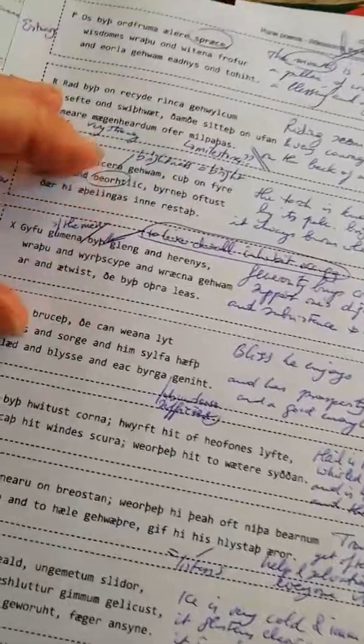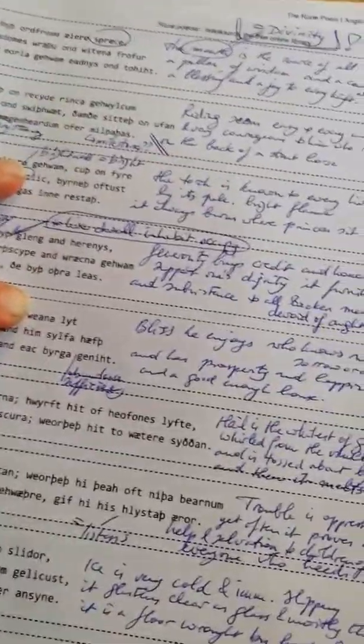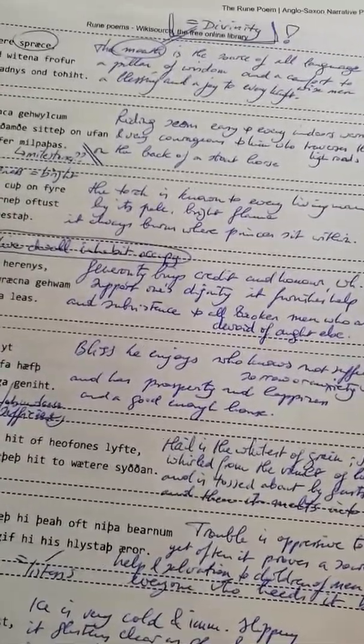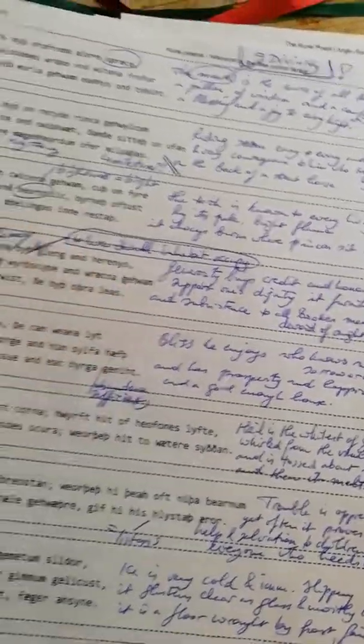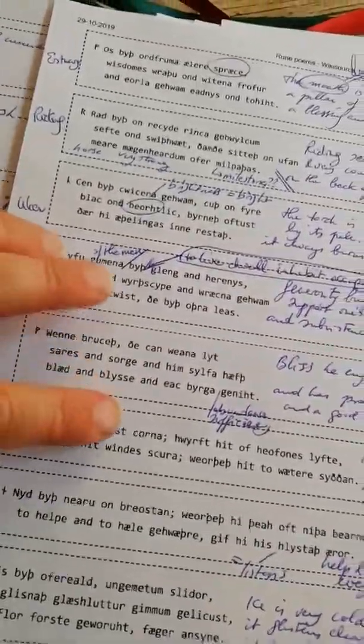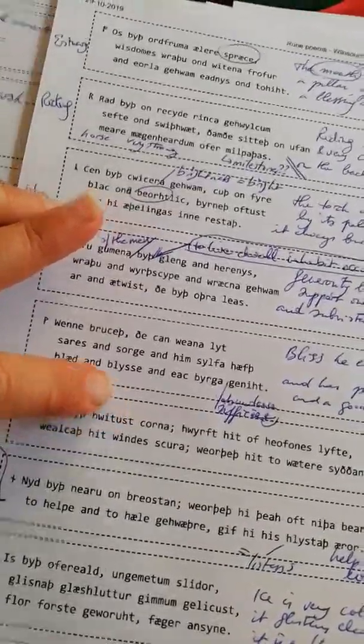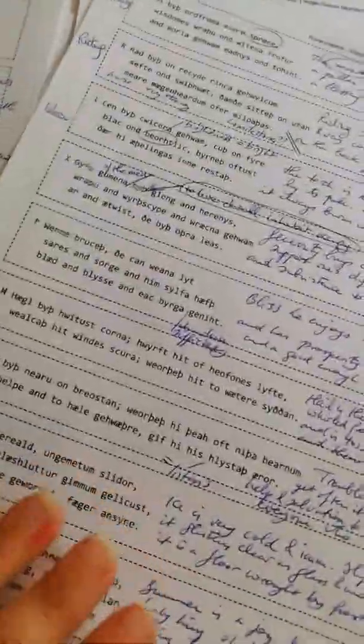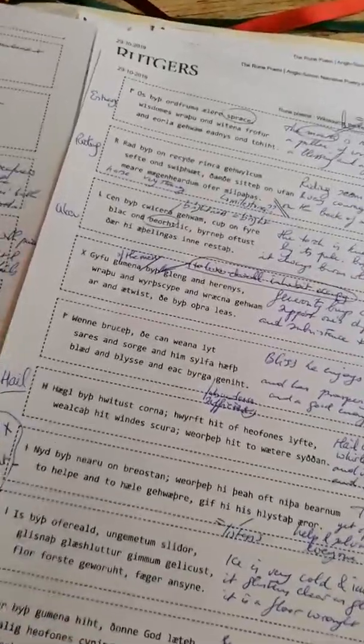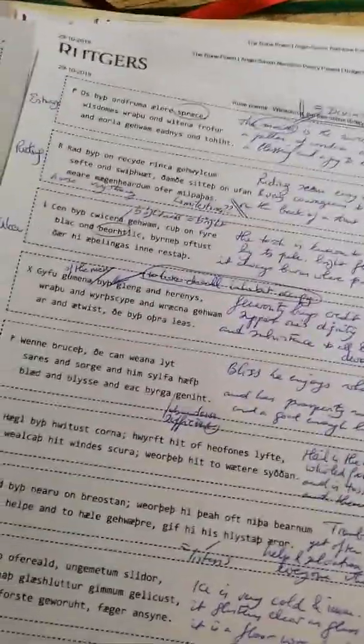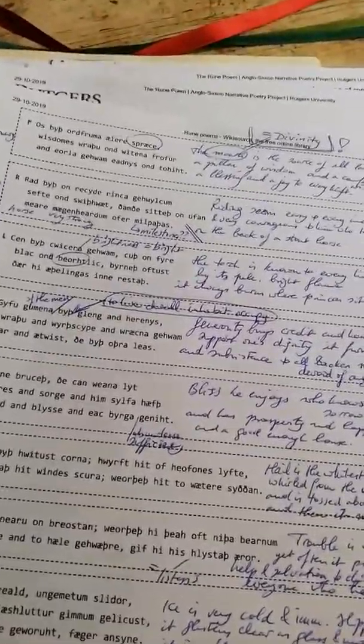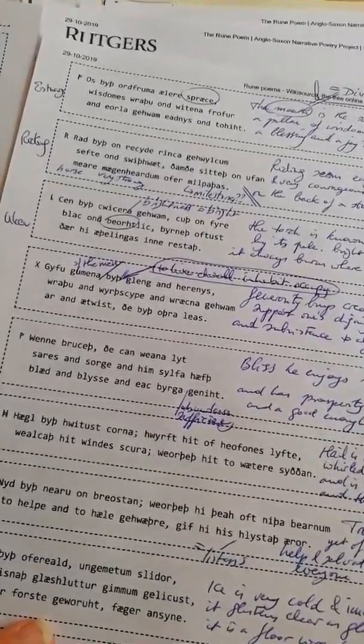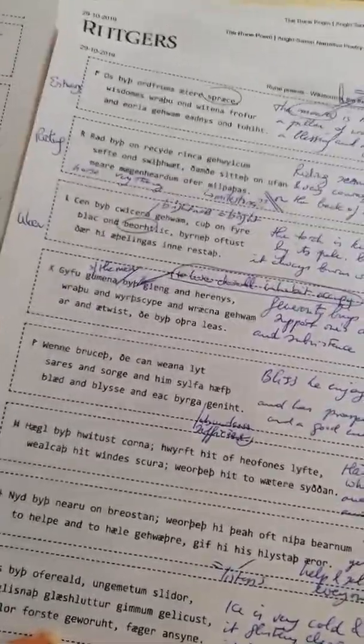Here, for example, Wunyo, I thought that's another cool one. Bliss he enjoys who knows not suffering, sorrow or anxiety and has prosperity and happiness and a good enough house. That's what it says on this end. And sorrow and anxiety. That makes me laugh because in Yiddish, it is also sorus, having sorus, having trouble. It's a very old and very problematic word, apparently. Wunyo then means joy. That's rather easy.